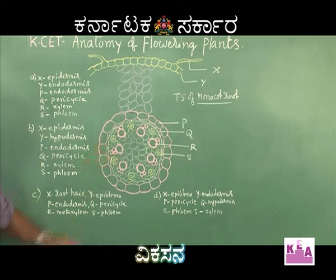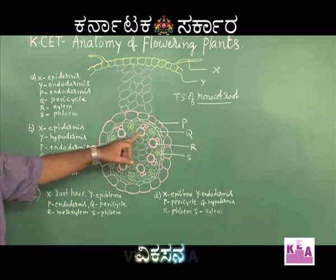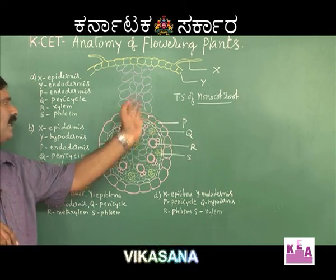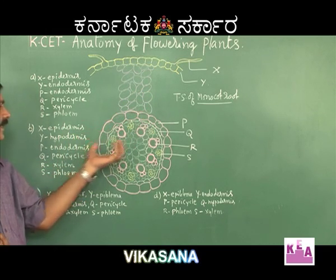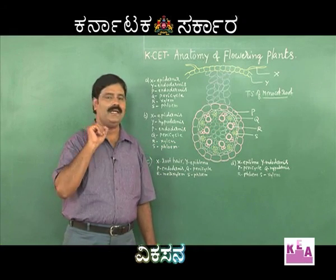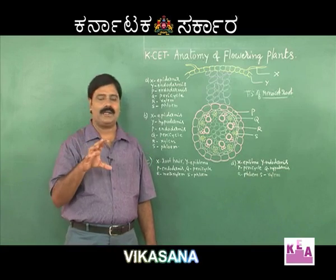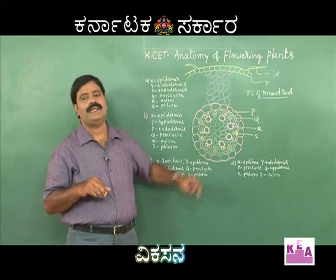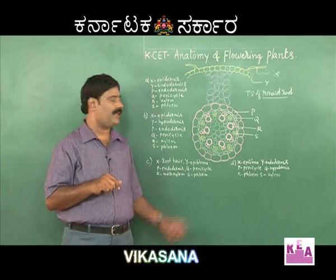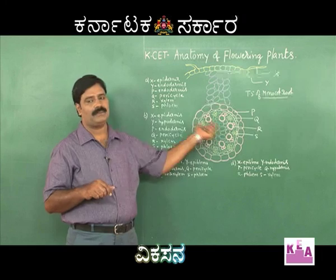Inside the stele region, we observe a radial type of vascular bundle arrangement where xylem and phloem alternate. In the exarch condition, proto-xylem faces outwards and meta-xylem faces inside towards the center. Q is pericycle — the outermost layer of the stele. R is xylem, specifically the meta-xylem element. S is phloem. The centrally located portion, predominantly parenchymatous, is the pith.